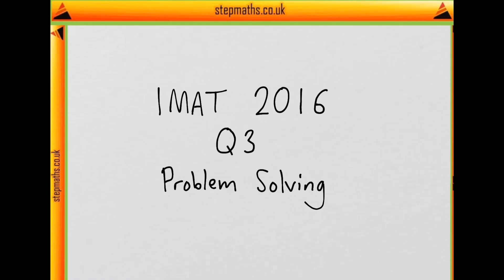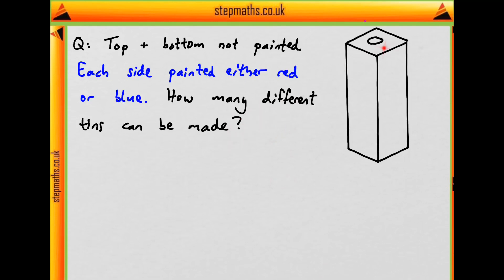This is question three on problem solving from the 2016 IMAT. We're given a biscuit tin which has four identical sides and the top and the bottom. The top and the bottom are not painted, but each of the sides is painted either red or blue. Based on this, how many different tins can be made?